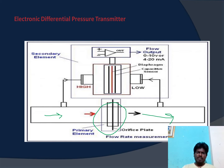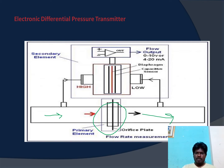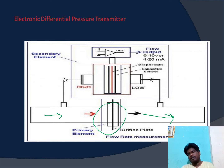Water or any liquid is flowing through this pipe and we want to measure it and convert this flow rate into a 4 to 20 milliampere signal, or maybe into a 0 to 10 volt signal. The function of this primary element is to create the differential pressure, because delta P is directly proportional to the flow rate. That is why we introduce the orifice plate.